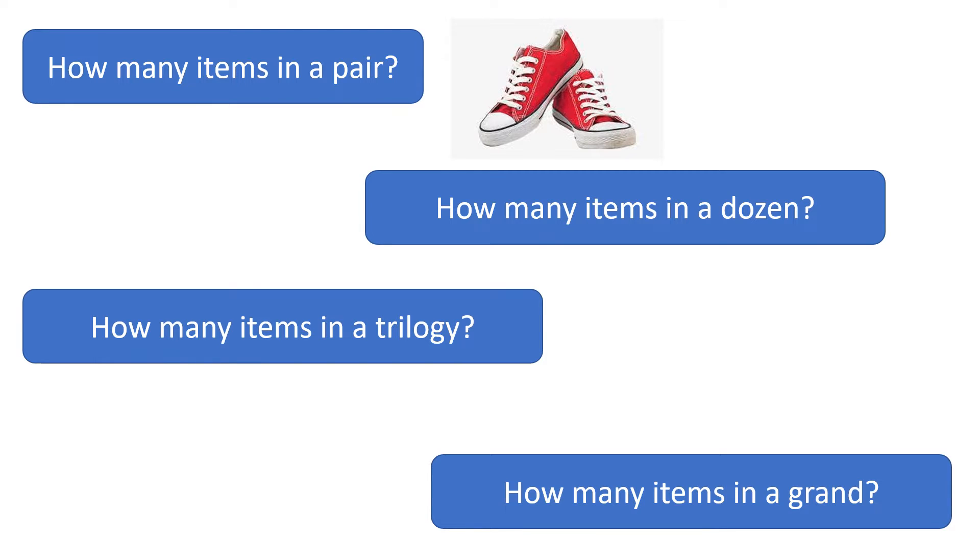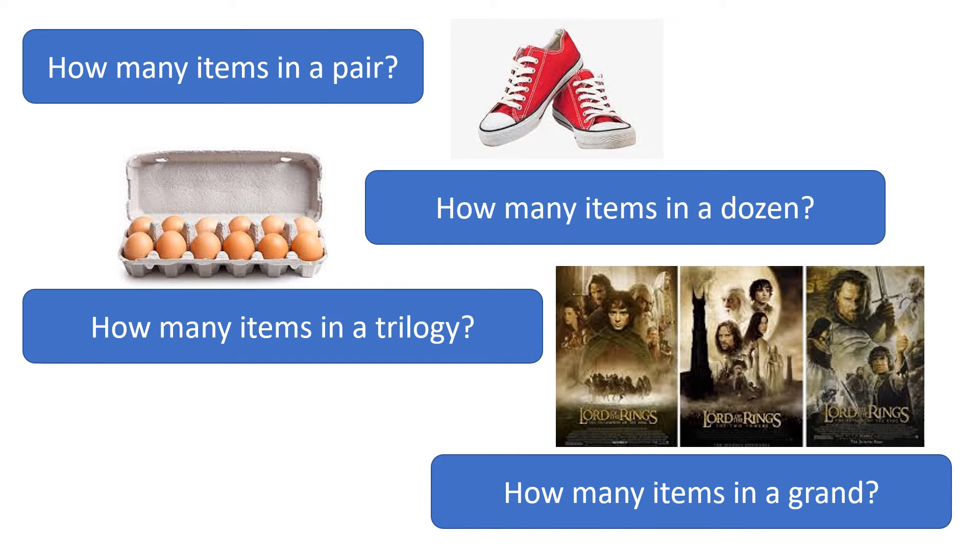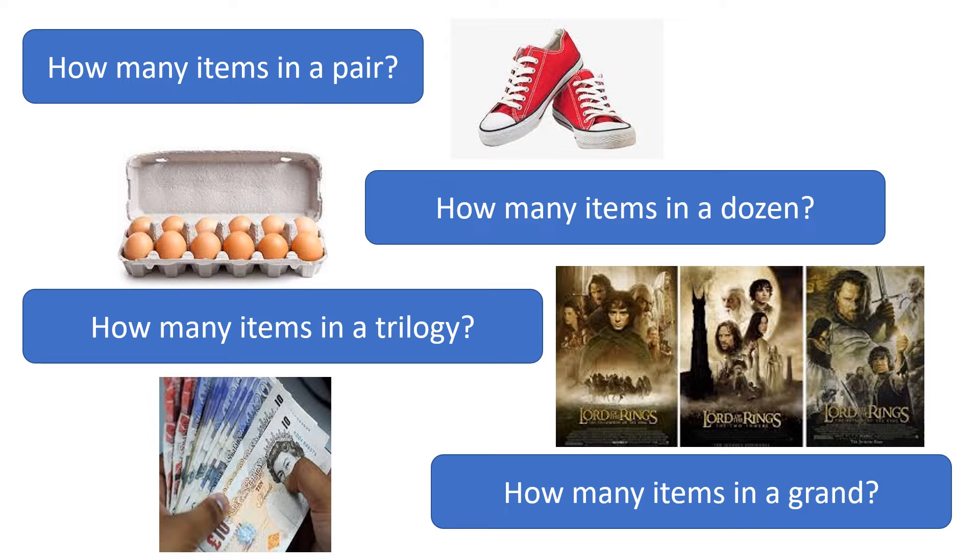If I said to you how many items are in a dozen, if I wanted a dozen eggs, you would recognize the word dozen as meaning twelve. If I said to you I'm going to watch a trilogy at the cinema, you would hopefully recognize that I was looking to watch three films in a row. Awesome trilogy, you should watch it.